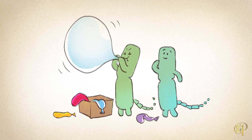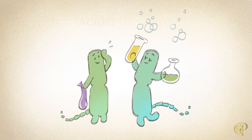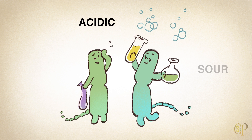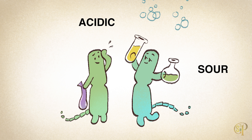The bacteria in this starter will produce carbon dioxide to leaven, as well as acidic and sour flavors. This is where sourdough gets its name.